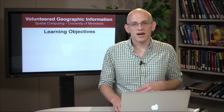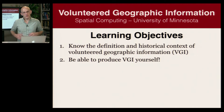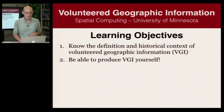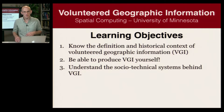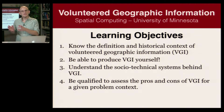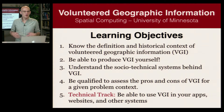In this module, we're going to have the following five learning objectives. First, by the end of the module, you should know the definition and historical context of Volunteer Geographic Information. Second, you'll be able to contribute VGI yourself to some well-known VGI repositories and databases. Third, you should understand the socio-technical systems — the combined social and technical processes — that are the mechanisms by which VGI is generally produced. Fourth, you should be able to assess the pros and cons of VGI for a given problem context. And finally, for those in the technical track, we'll go over the basics of using VGI in an app, website, or any other system.